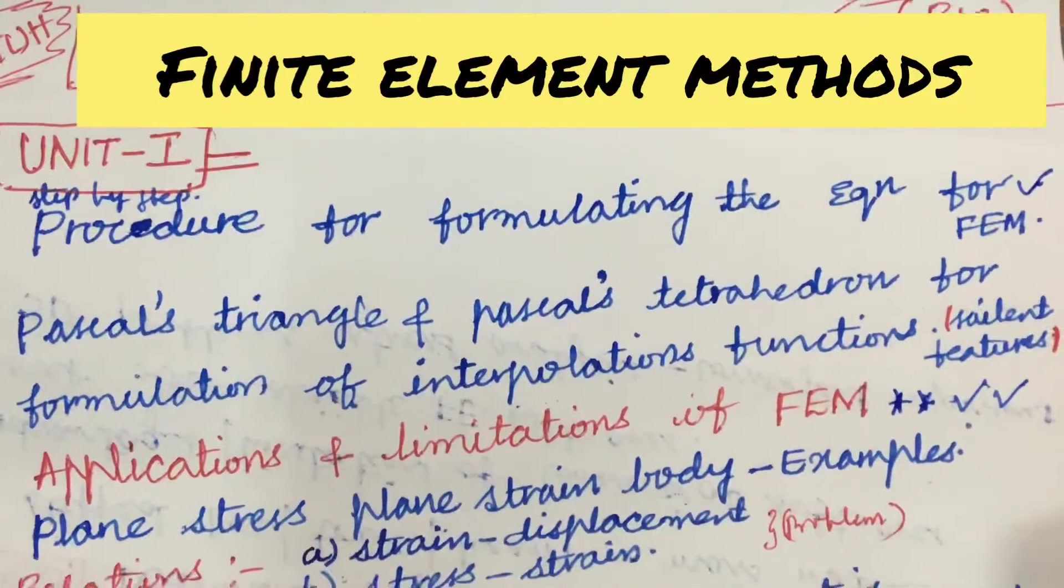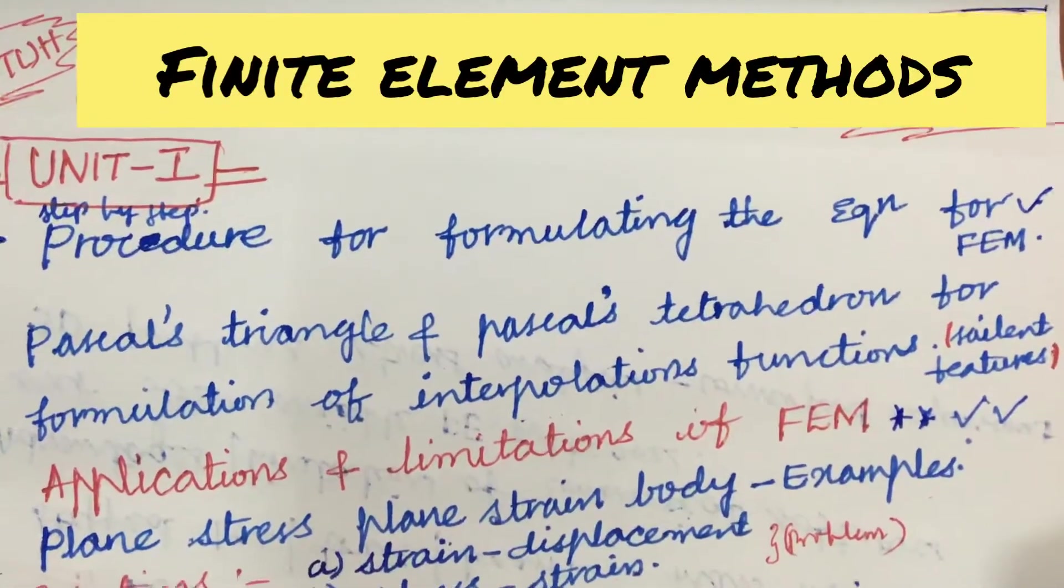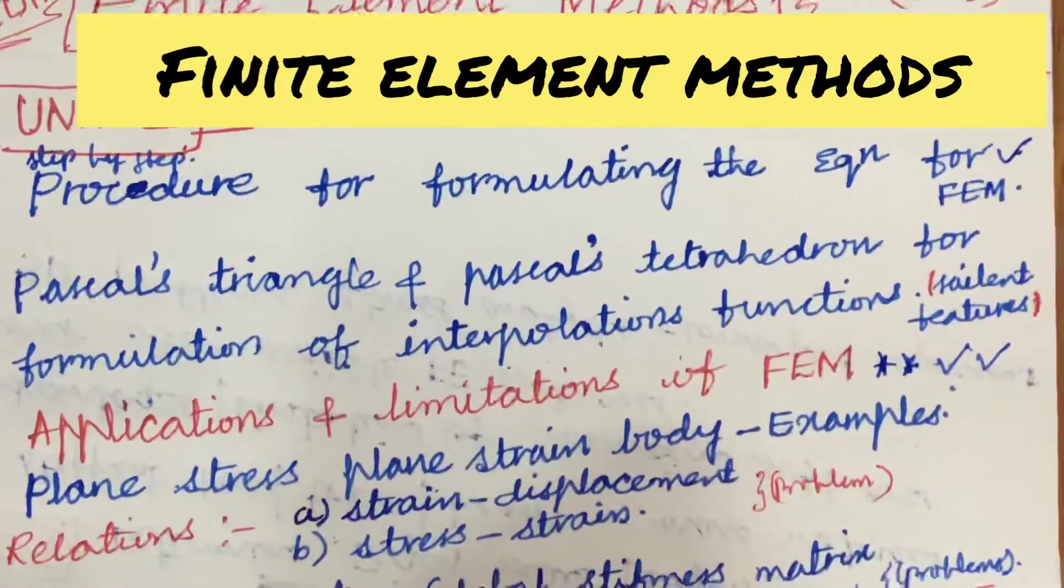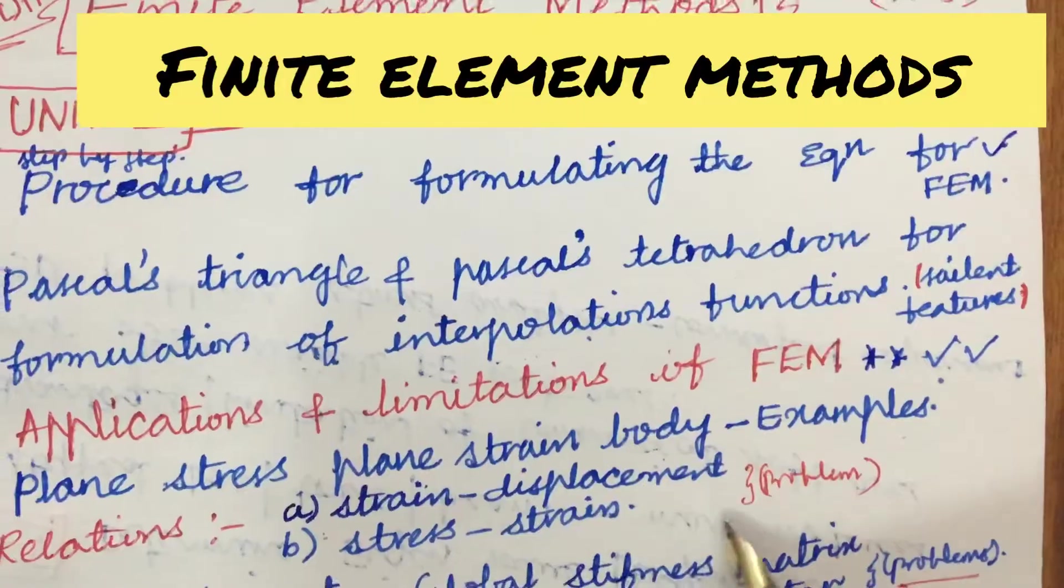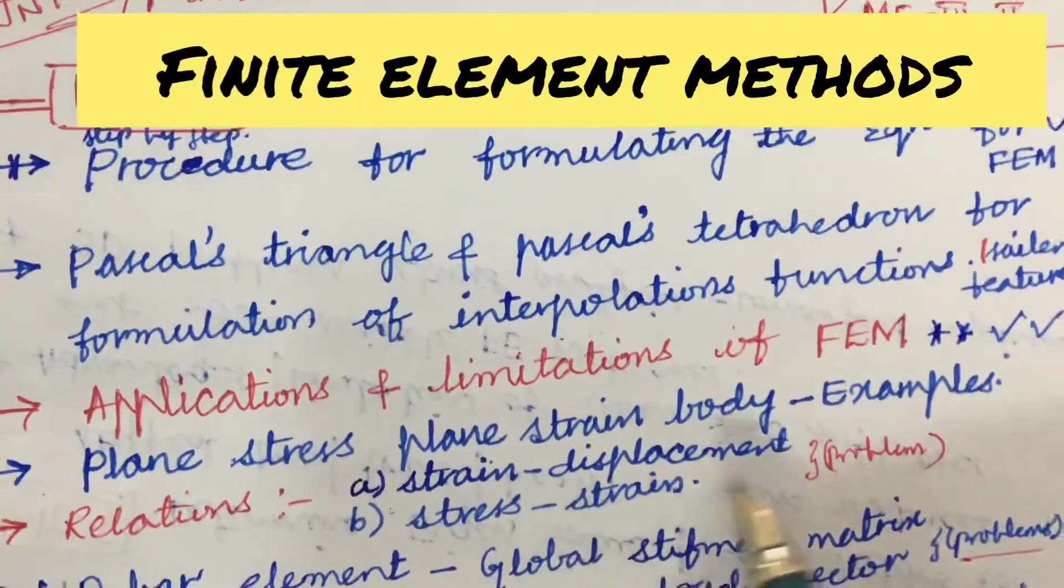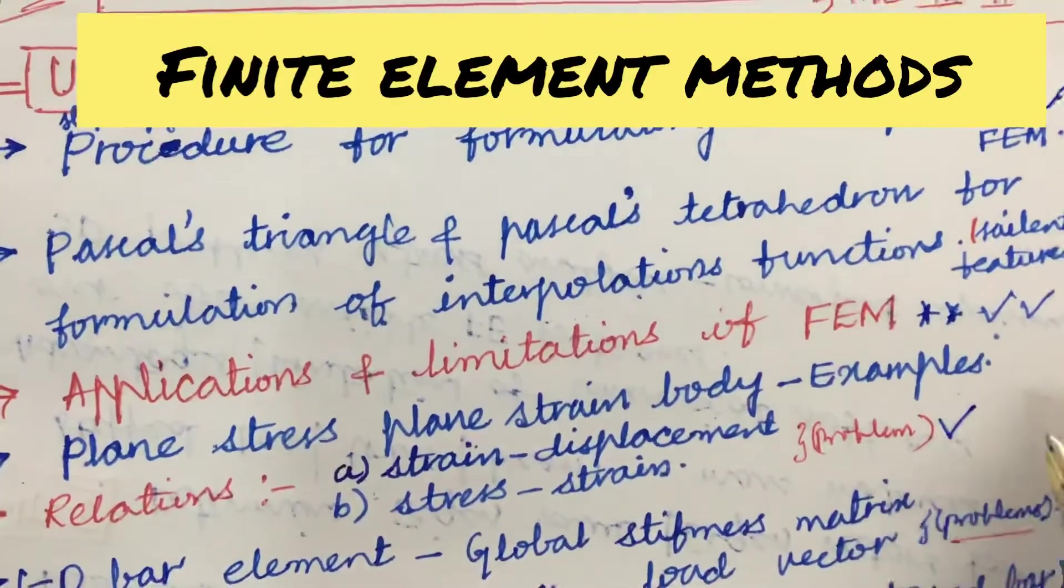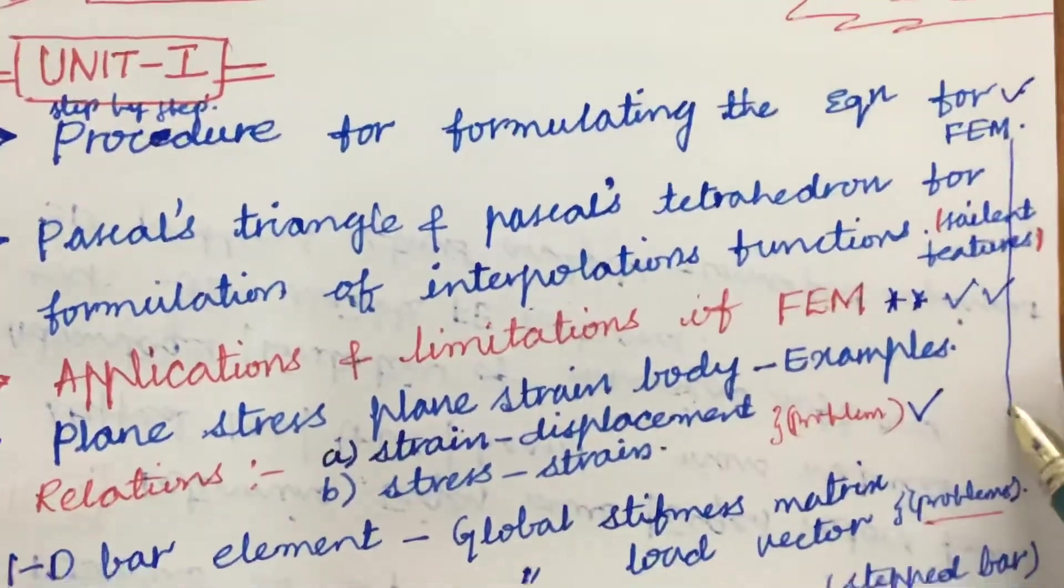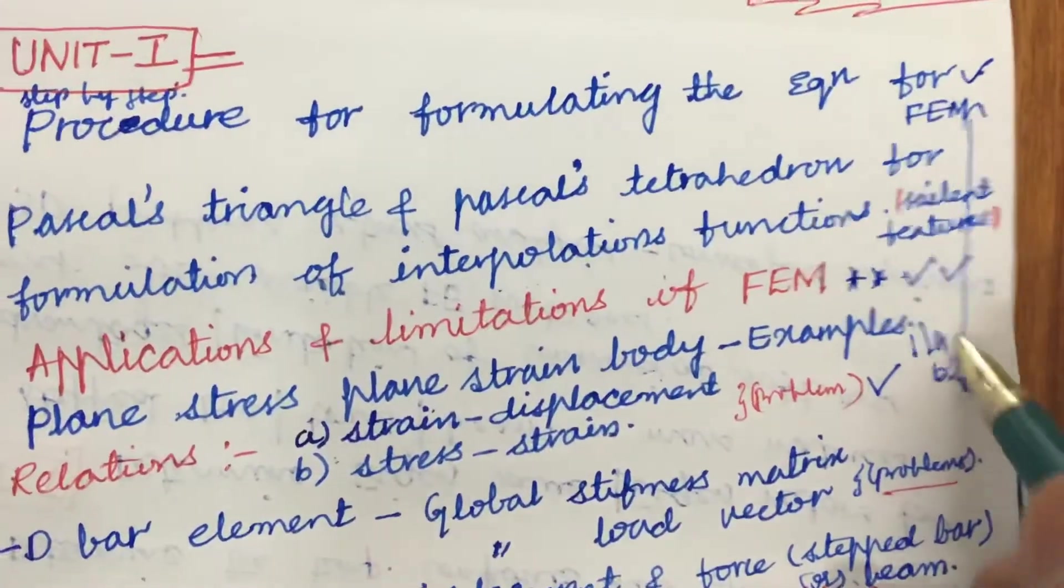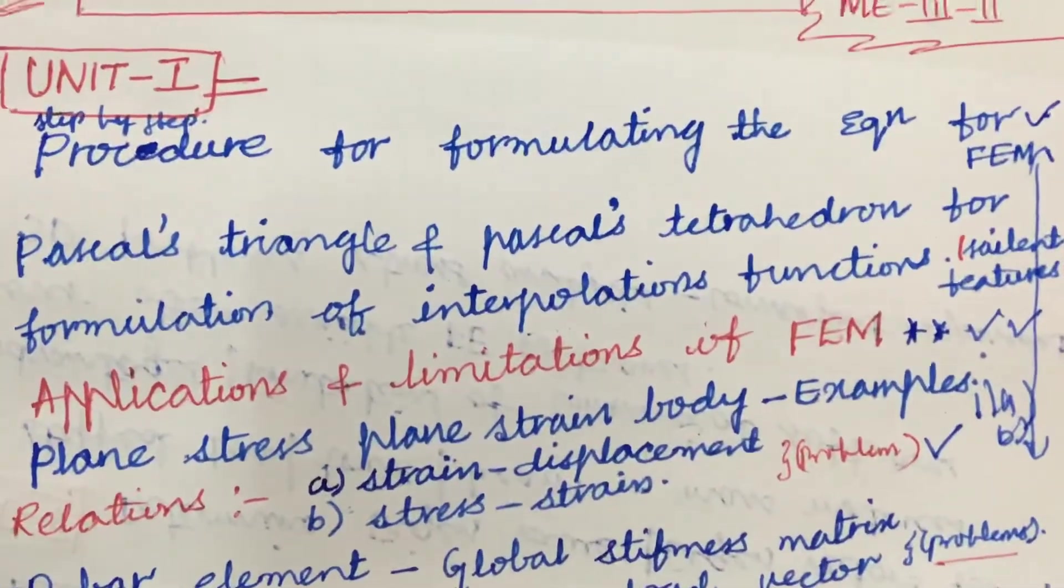From Unit 1 we can expect two questions this time because it is a lengthy course with lengthy structure. Later, the plane stress as well as plane strain body, along with examples and relations for strain displacement as well as stress strain, and problems related to this. This question may be 1A as well as B. Do not forget to work out all of this as it is a problematic subject.